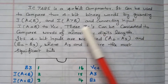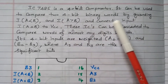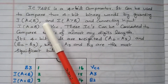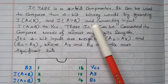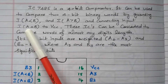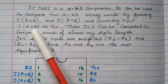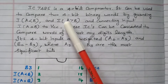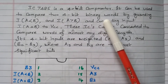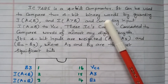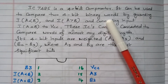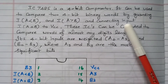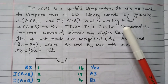It can be used to compare a 4-bit binary word by grounding the I A-less-than-B and I A-greater-than-B inputs, and connecting the I A-equal-to-B input to VCC. It will compare the 4-bit binary number directly and give the output as whether A is equal to B, A is less than B, or A is greater than B.